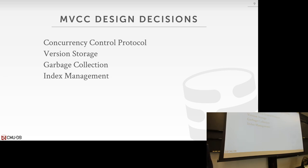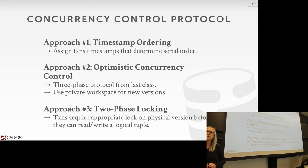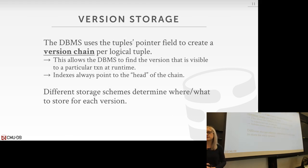The first design decision is concurrency control protocol. These are the protocols you've been studying — timestamp ordering, OCC, and two-phase locking. When you encounter a write-write conflict, you use one of these protocols to determine which transaction should be allowed to write to an object and at what isolation level.